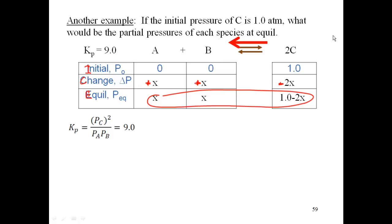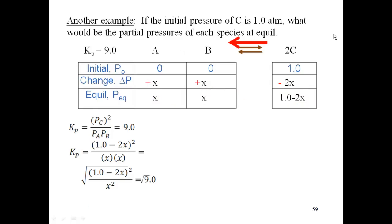So let's set up Kp. Kp then is your partial pressure of C to the second power divided by partial pressure of A divided by partial pressure of B. Remember I said Kp, I want it written with partial pressures, not concentrations, because this is partial pressures. So now we're going to plug those values in. I'll plug in my PC, which is going to be 1 minus 2X, that whole thing squared. Pa is X and Pb is X. Or simplifying this, 1 minus 2X squared divided by X squared is equal to 9.0. I can go to the quadratic formula or, since this is a perfect square, I can do my square root of both sides. When I do the square root of both sides, I get 1 minus 2X over X is equal to 3.